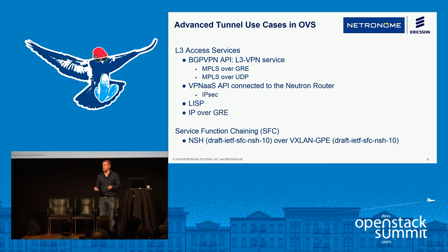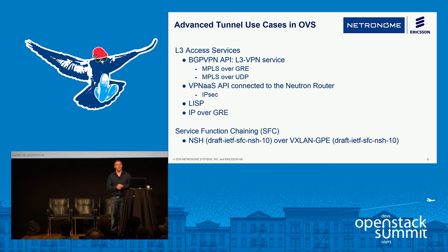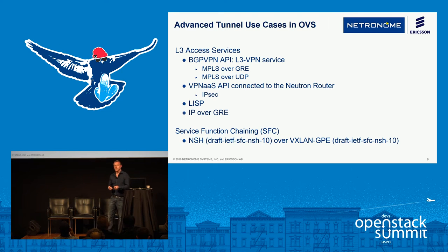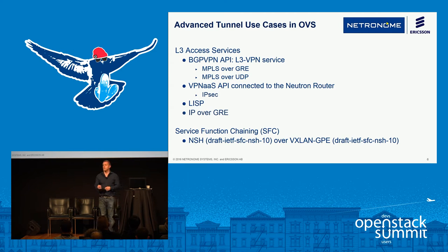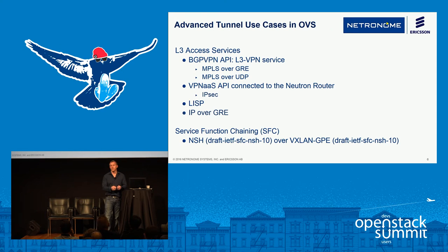The first use case we focused on is L3 VPN — doing MPLS over GRE. That was our primary use case, and it's fully developed and complete. MPLS over UDP is pretty near the end of completion and should be available soon. Other use cases we're working towards include VPN as a service — being able to take IPsec and provide that into the VM itself. LISP is another one being driven, as well as IP over GRE. One of the more popular ones right now is SFC — Service Function Chaining with NSH — which is getting a lot of traction.